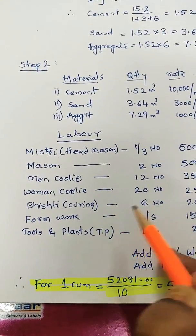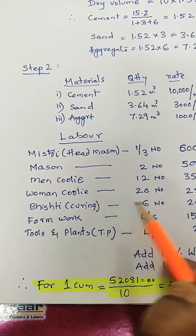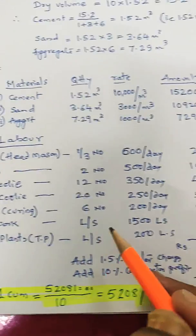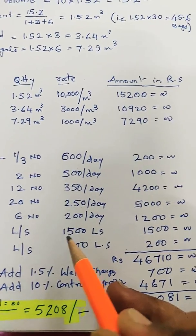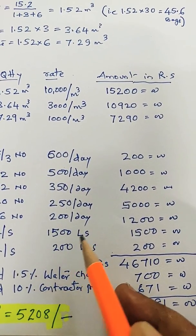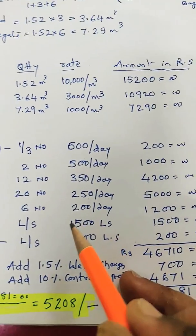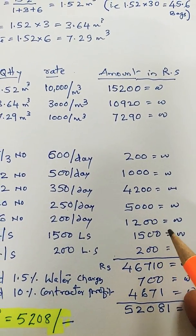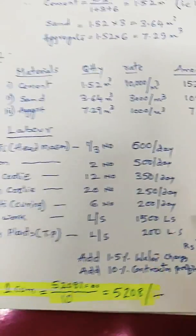Then formwork: lump sum it is taken. It is foundation, so less formwork will be there. Lump sum it is taken, no calculation for this, around 1,500 rupees for 10 cubic meters.